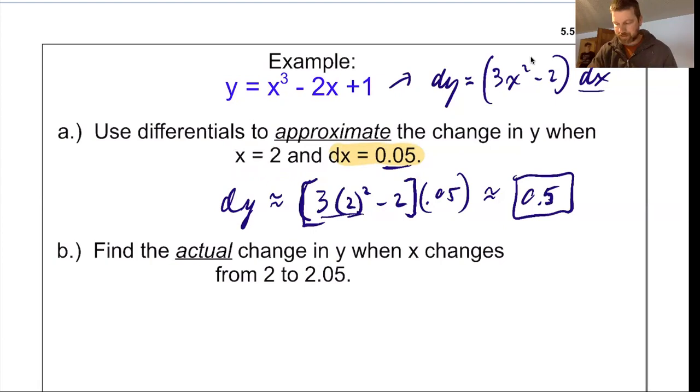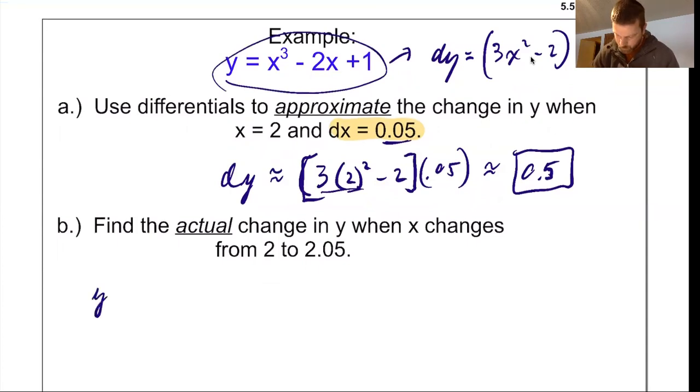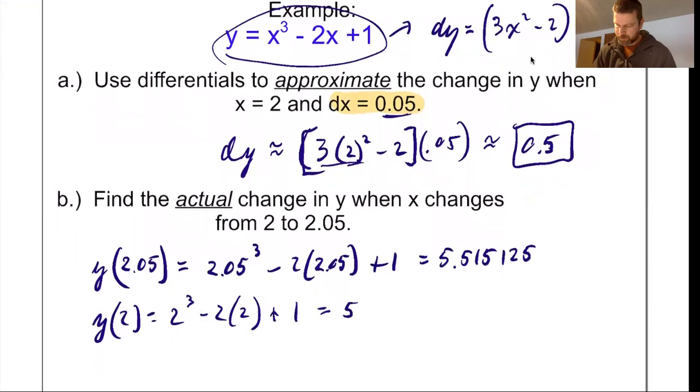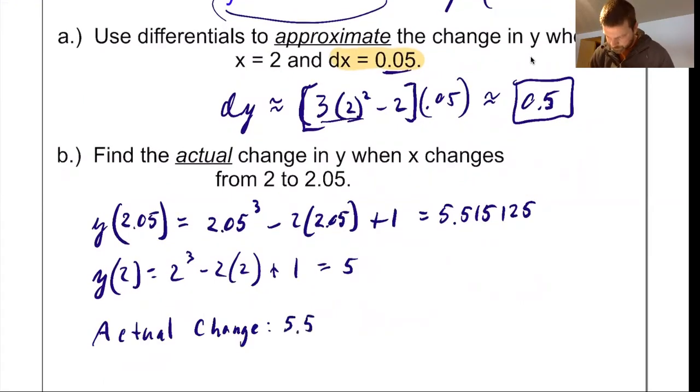If I wanted to see the actual exact change, I would have to plug in the 2.05 and plug in the 2 into my original equation and see how much I actually changed y. So if I wanted actual change, I would find y of 2.05, which would be 2.05 to the 3rd minus 2 times 2.05 plus 1, which I am not doing in my head. It's 5.515125. If I plugged a 2 in, that's at least a little easier. That'd be 2 cubed minus 2 times 2 plus 1. I could probably do that in my head. That's 5. So the actual difference is my 5.515125 minus 5, which is 0.515125.